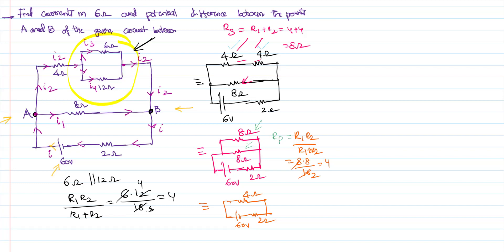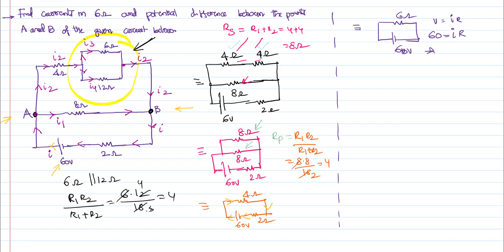Looking at the current flow, the current I passes through the combined resistance of 4 ohms and then through the 2 ohms. Since these are in series, the total resistance is 4 plus 2 equals 6 ohms. Using V equals IR, with V equal to 60 volts and R equal to 6 ohms, we get I equals 60 divided by 6, which is 10 amperes. So the total current in the circuit is 10 amperes.